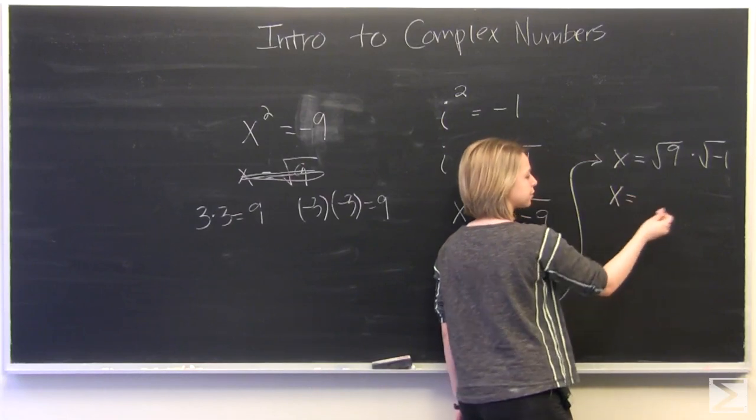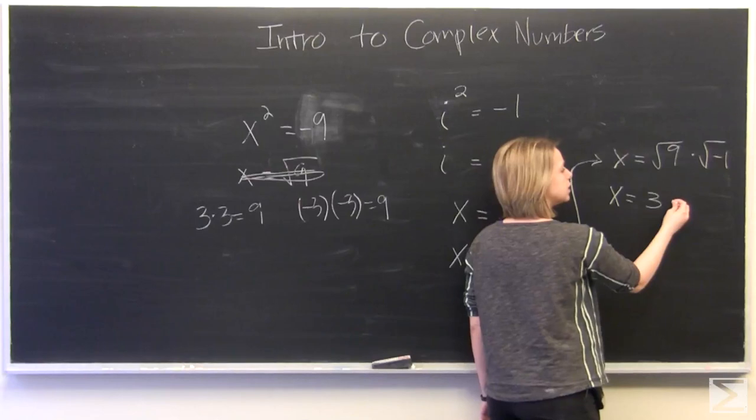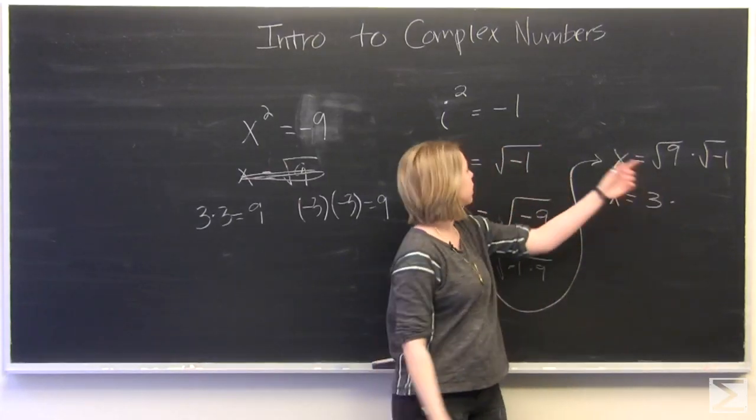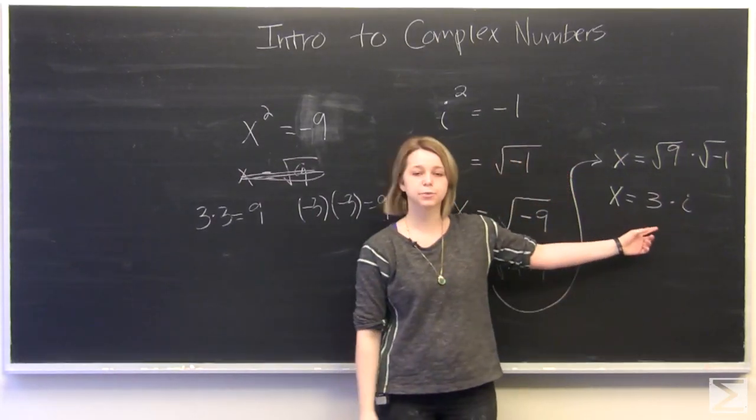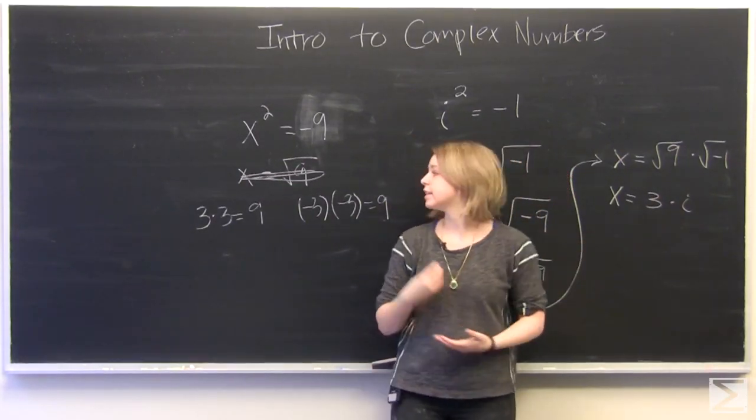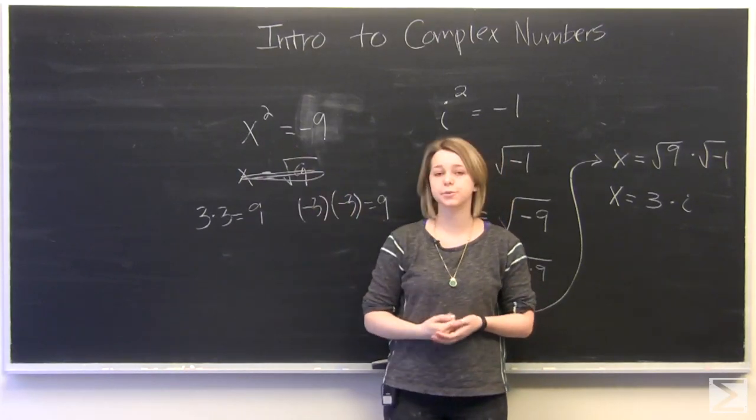So x is equal to the square root of 9, which is 3, times the square root of negative 1, which we've defined as i. So x is equal to 3i, which is the most simple form of x squared is equal to negative 9.